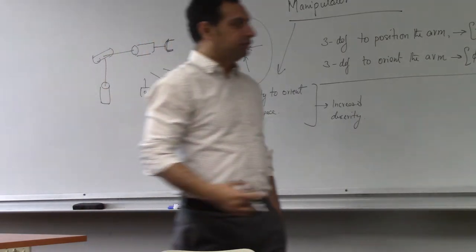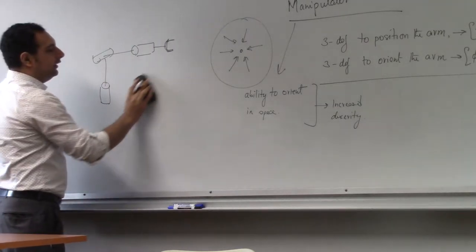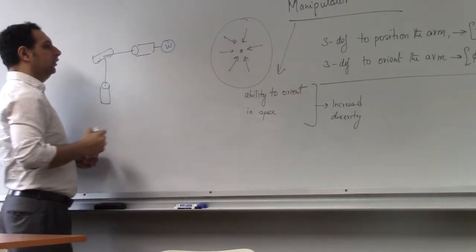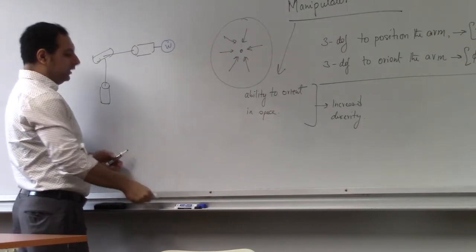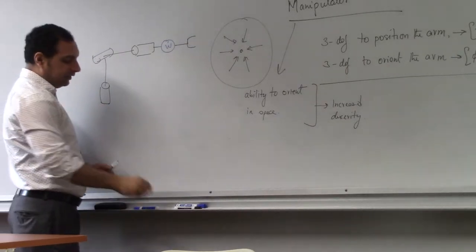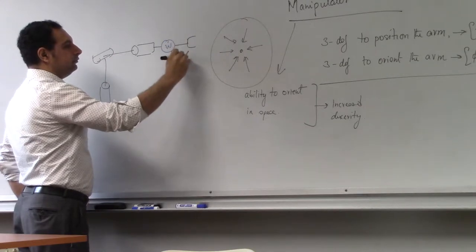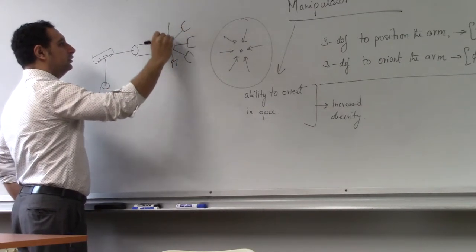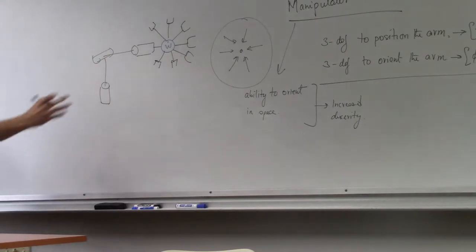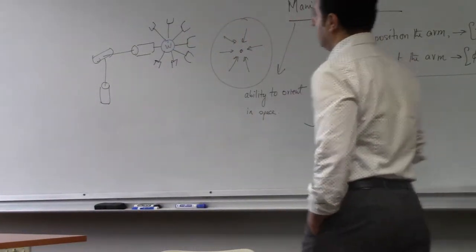In this case, we need a wrist so that you can have multiple orientations. The wrist will give you the ability to orient in space. Ideally, it gives you more dexterity — increased dexterity. You become more dexterous because now not only can you reach a point, but you can also orient at a point. So we will add what is called a wrist. Let's say that you have a wrist here, and then you have your end effector.